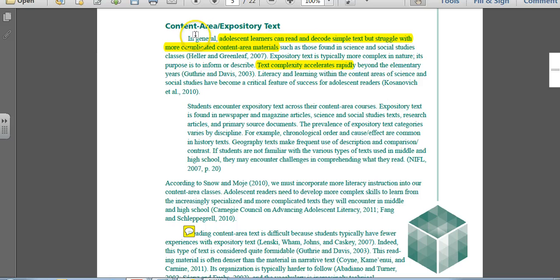First of all, we want to look at our content area and expository text. Adolescent learners can learn, can read, and decode simple text, and most of the time you will find that they can do that. They do seem to read well. But they don't able to handle more complicated content area materials. So we really want to notice as we get into the text complexity and how quickly it begins to rapidly accelerate beyond the elementary years, what can we do, particularly with expository text. They're much more difficult text that you're going to find in your content area classes.